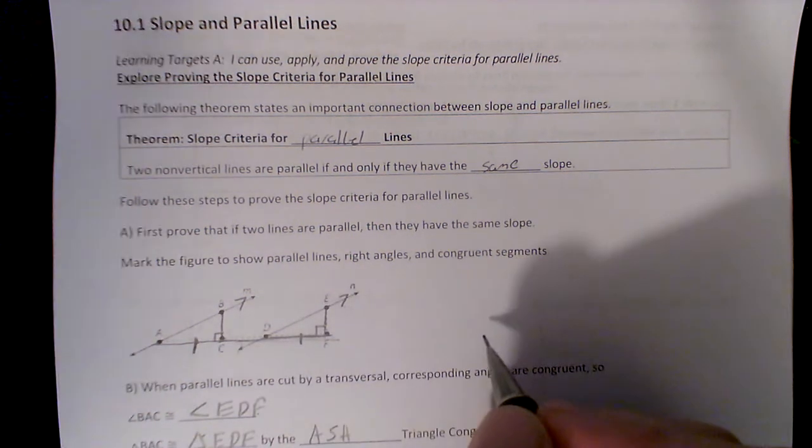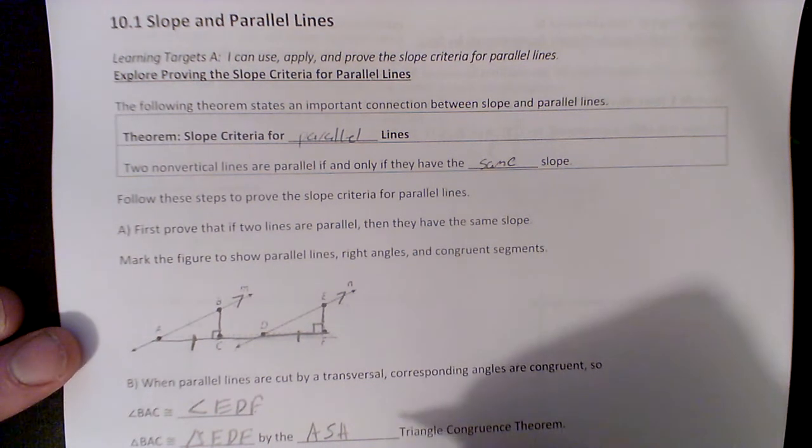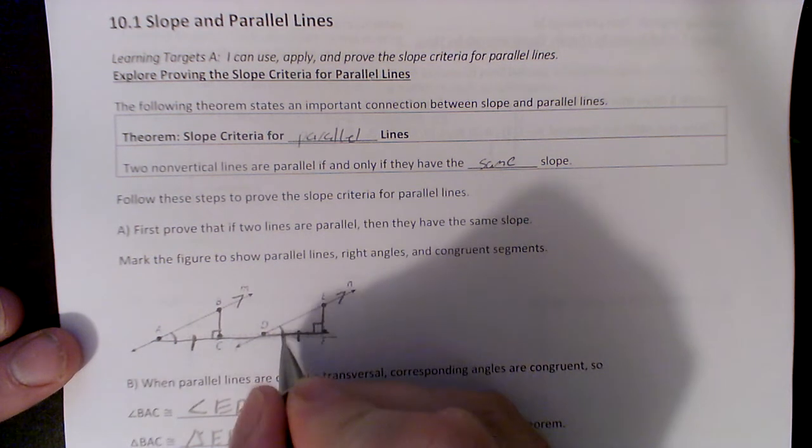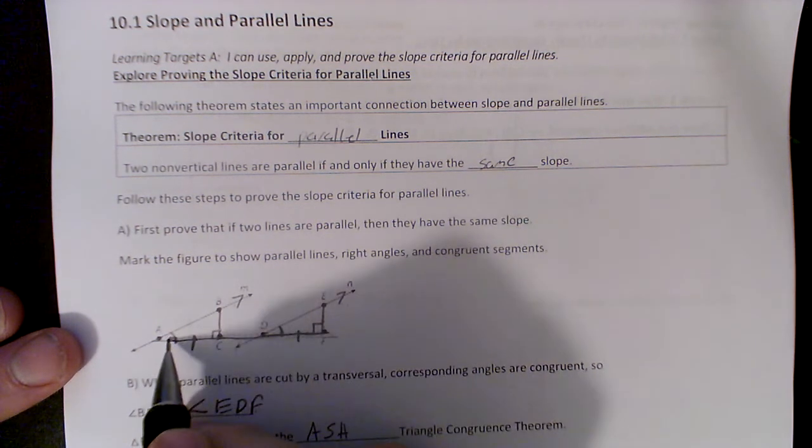That would be AC and DF. So we have the parallel lines. Well, given these parallel lines, we know that angle BAC, which I'll mark here, is going to be congruent to angle EDF because they're corresponding.